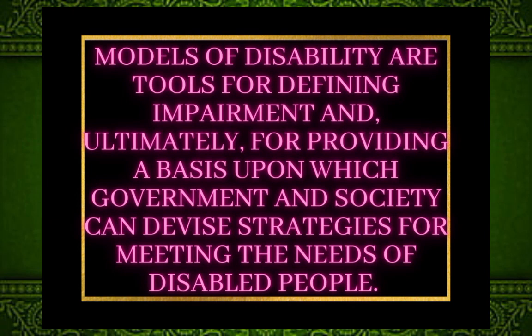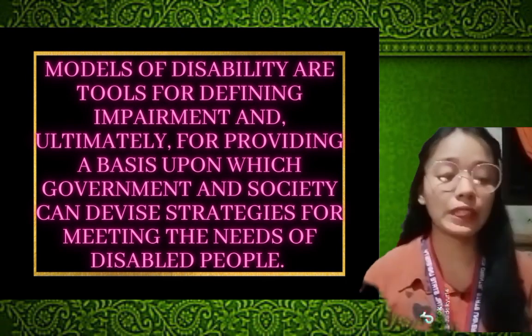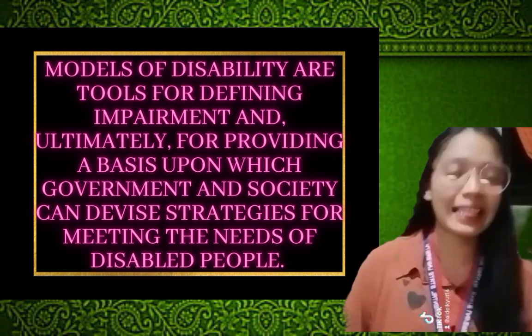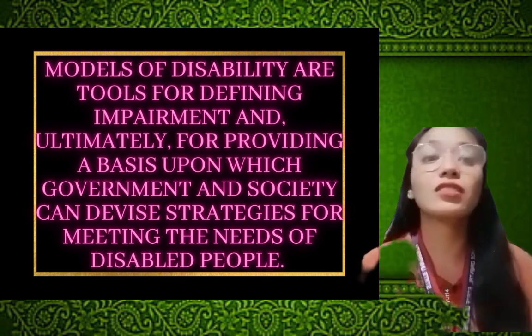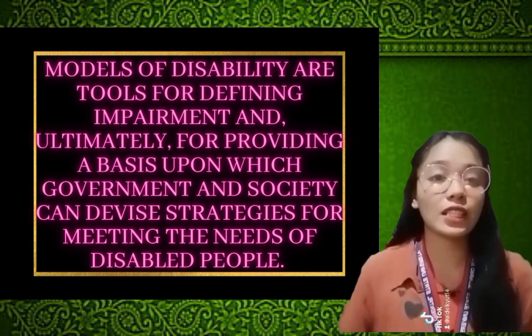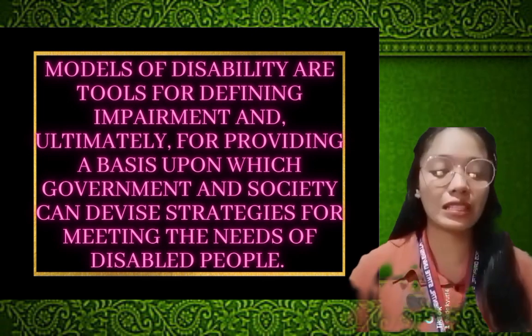Before we go to the different models of disability, we'll first define the models of disability. The models of disability are tools for defining impairment and ultimately for providing a basis upon which government and society can devise plans for meeting the needs of disabled people. These are the instruments for defining the impairment, or a foundation for societal and governmental plans which address the needs of persons with disability.